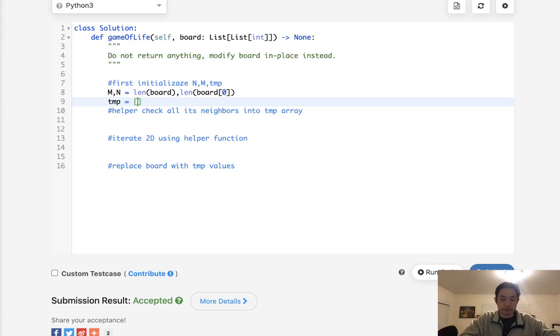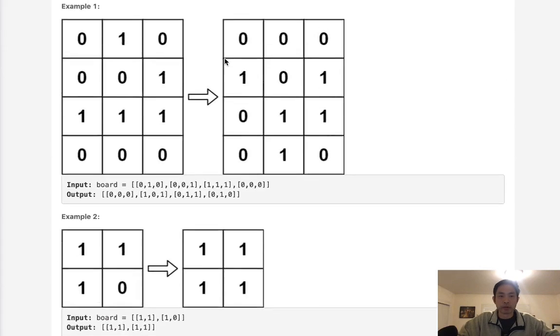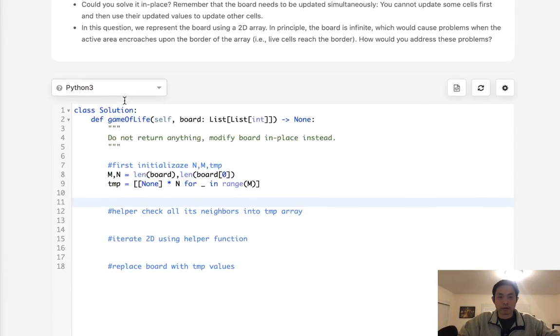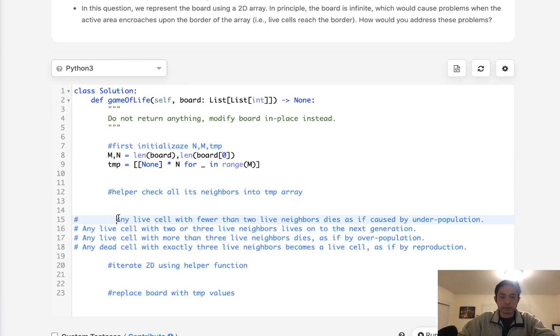Okay, we also need to have our temporary array here. And this will just start with a bunch of values of none. So we'll just say none, multiply that by the number of columns, which is n. And we'll do this inside of a list comprehension. So for whatever in range of m. So this will be number of columns and the number of rows. Alright, so now we should write our helper function. And we need to make sure that we have all our rules in place.